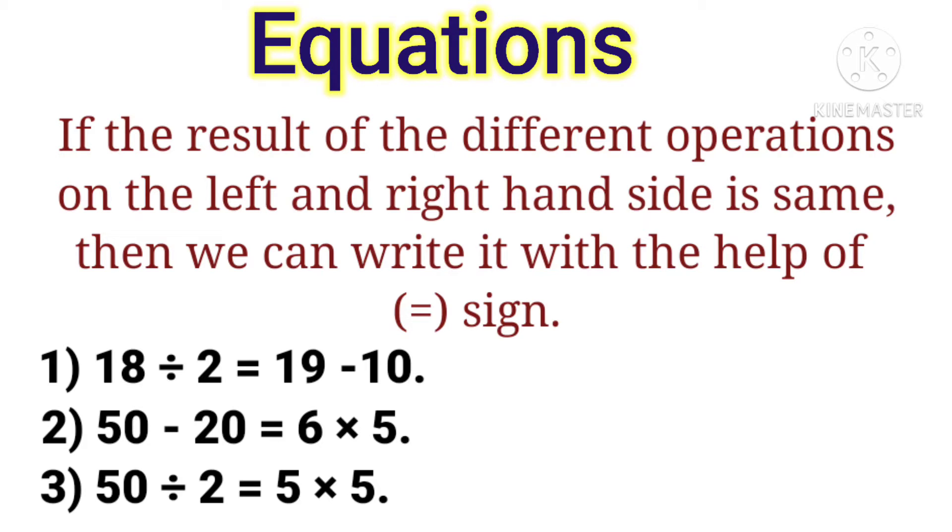For example, 18 divided by 2 equals 19 minus 10. Both these operations give 9 as an answer.